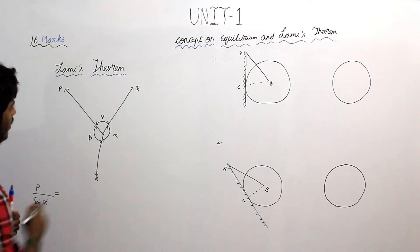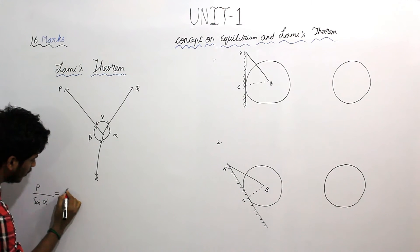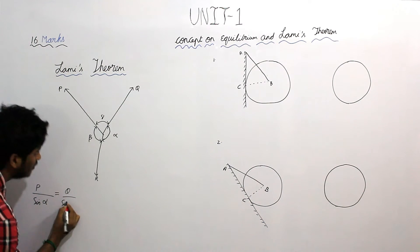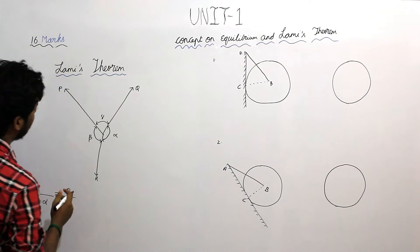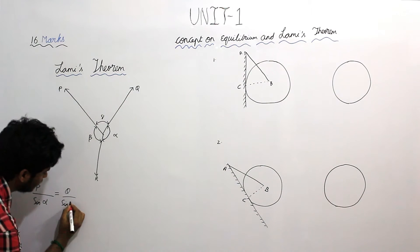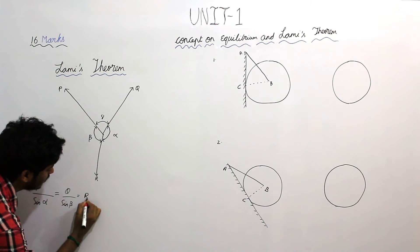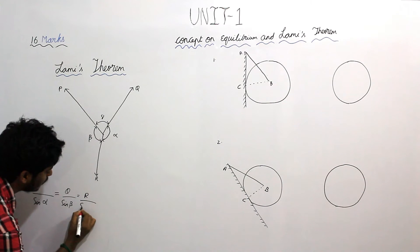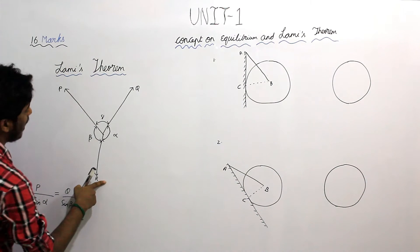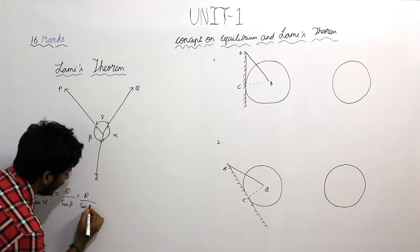Similarly, Q is directly proportional to the sine of the angle between the other 2 forces, that is angle Beta. And R is directly proportional to the sine of the angle between the other 2 forces, that is angle Gamma.